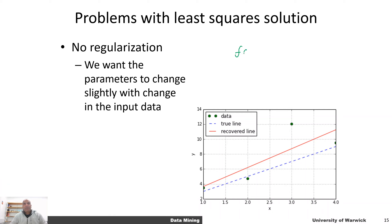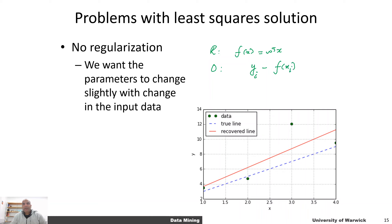We've got a function f of x equal to w transpose x. You can add or not add the bias term — it doesn't really matter much as long as you understand the implications. That is the representation bit. The optimization bit is we've got a target value for a given example, which is yi, and then a prediction output f of xi for that example.